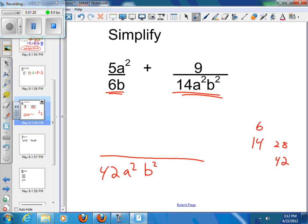So in order to get to 42a²b², starting at 6, I'm going to have to multiply the 6 times 7, multiply by an a², and multiply by a b. So I need to do that to both top and bottom, just like I did in the previous one. So 7 times 5 is 35, and then I'm going to have a⁴b.